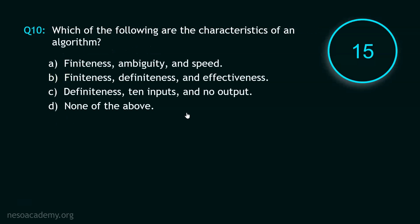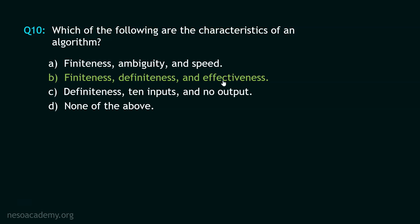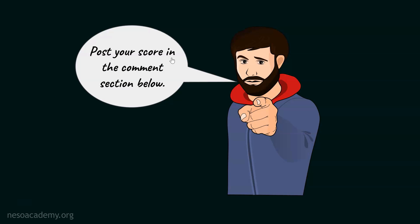And your time starts now. Stop. The correct option is option B. Finiteness, definiteness and effectiveness. We are done with all the 10 questions of this rapid-fire quiz. I hope you noted down your scores as well. I now want you to post your scores in the comment section below. Thank you.